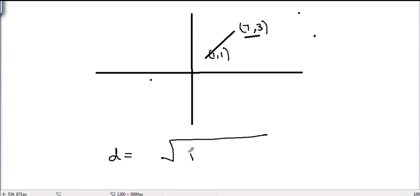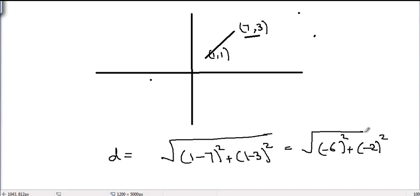one minus seven squared plus one minus three squared. So it equals square root of negative six squared plus negative two squared, which equals square root of 36 plus